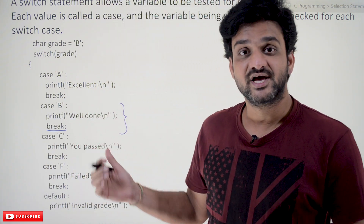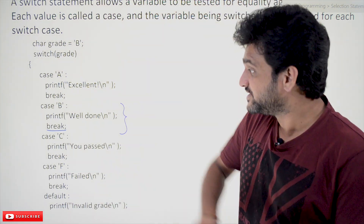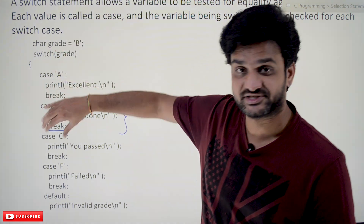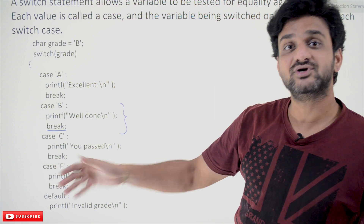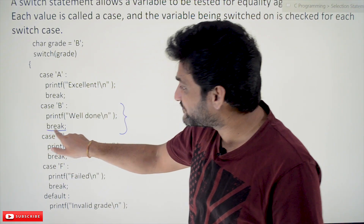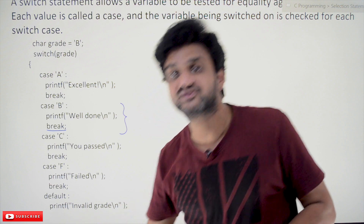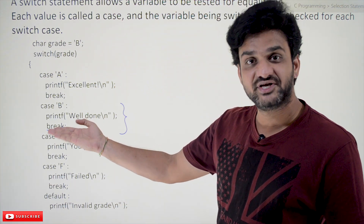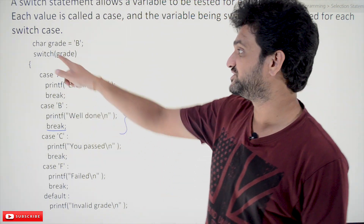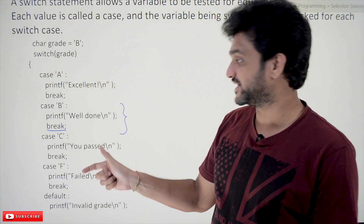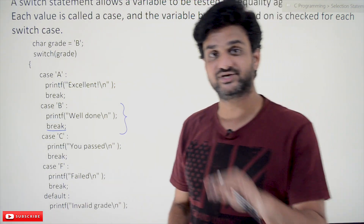After that we use a break statement, which is an important aspect to understand in switch cases. Break is a jump statement. Whenever a break is encountered within the switch statement, the compiler will come out of the switch and the lines after the switch will get executed. So break means jumping to the end of the switch, and the line after the switch statement executes.